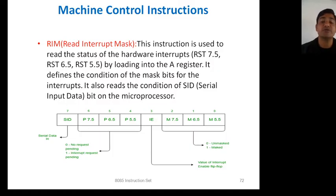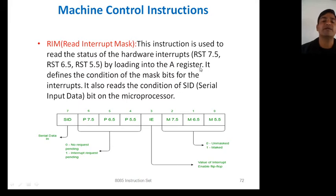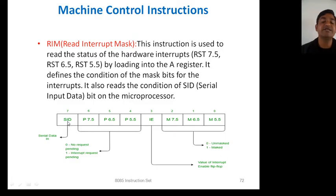Next one is RIM — Read Interrupt Mask. Read means data is incoming into the microprocessor. This is used for SID — Serial Input Data — meaning data is coming into the microprocessor. This instruction is used to read the status of hardware interrupts RST 7.5, RST 6.5, and RST 5.5 by loading into the accumulator. It defines the condition of mask bits and also reads the condition of the SID bit.